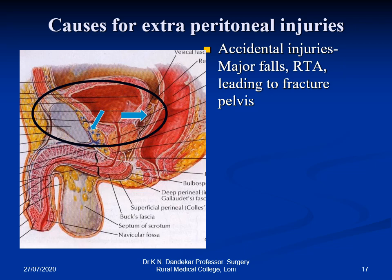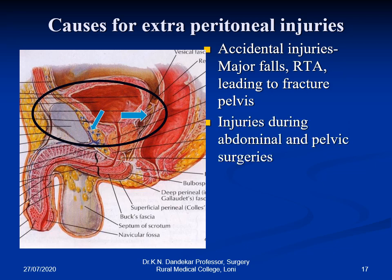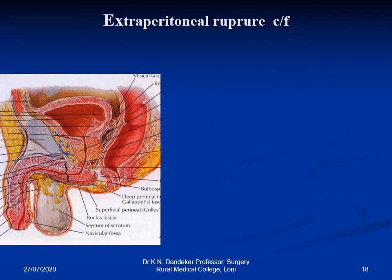Since the fracture goes backward and causes injury without involving the peritoneum, these injuries are extraperitoneal. Sometimes this can happen during perineal surgery, rectal surgeries, or APNR operations. Another possibility is during operations for high hemorrhoids, anal fissures, or fistula-in-ano — if the surgeon loses track of depth and there is a sudden injury to the urinary bladder, that will result in extraperitoneal bladder injury.